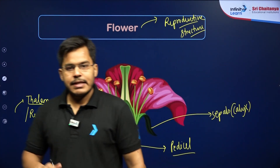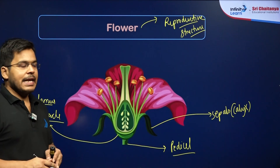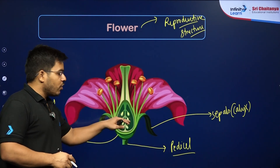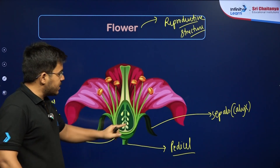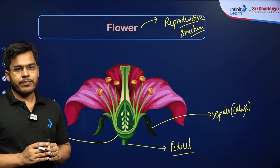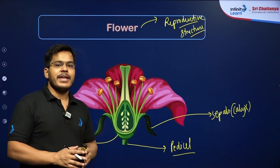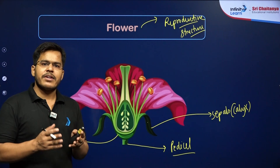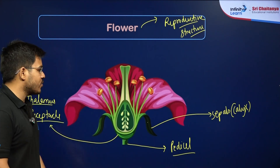The function of the calyx or sepal is to protect the flower when it is in the bud state. Also, since the sepal is green in color, it helps in the process of photosynthesis and produces a little food for the developing flower.